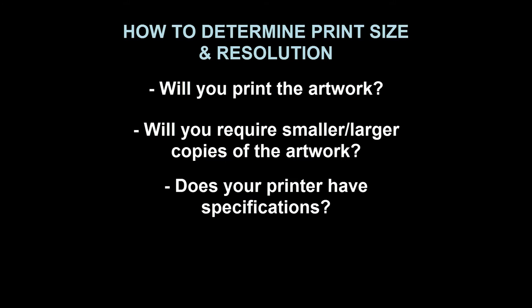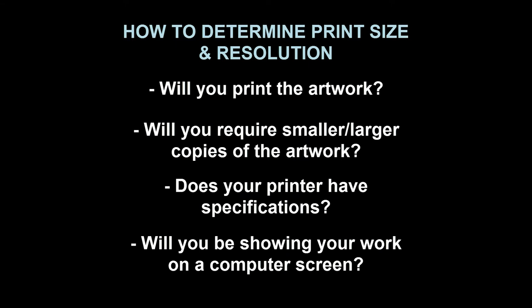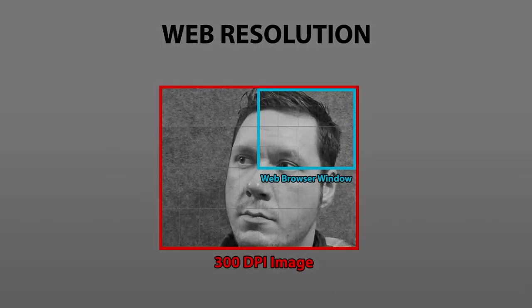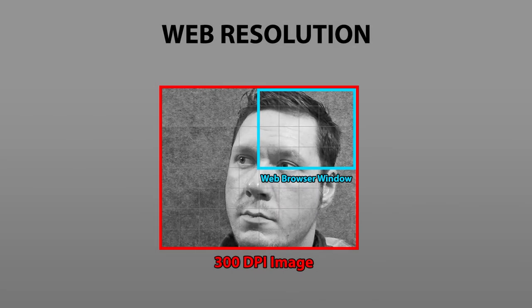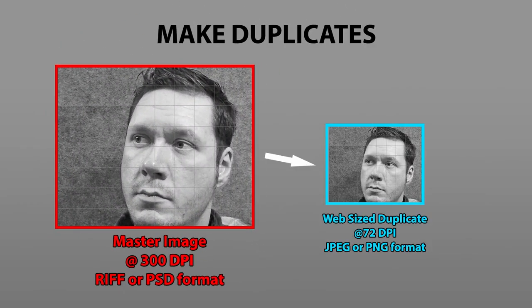If you're not printing your work, you'll need to consider the size and resolution for displaying your work on a computer. Since most computers only support a resolution of 72 DPI, you'll want to avoid posting anything other than that to the web because it will be too large to fit on the screen and it'll take a long time to download. Large and high resolution images should be saved as a duplicate copy that is 72 DPI and sized appropriately for the web.